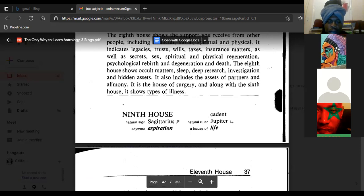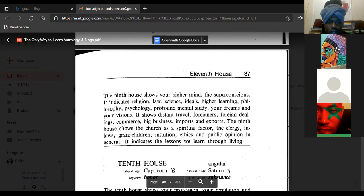Ninth house, natural sign Sagittarius, keyword aspiration, cadent, natural ruler Jupiter, a house of life. The ninth house shows your highest mind, the superconscious. It indicates religion, law, science, ideals, higher learning, philosophy, psychology, profound mental study, your dreams and your visions. It shows distant travel, foreigners, foreign dealings, commerce, big business, imports and exports. The ninth house shows the church as a spiritual factor, the clergy, in-laws, grandchildren, intuition, ethics, and public opinion in general.